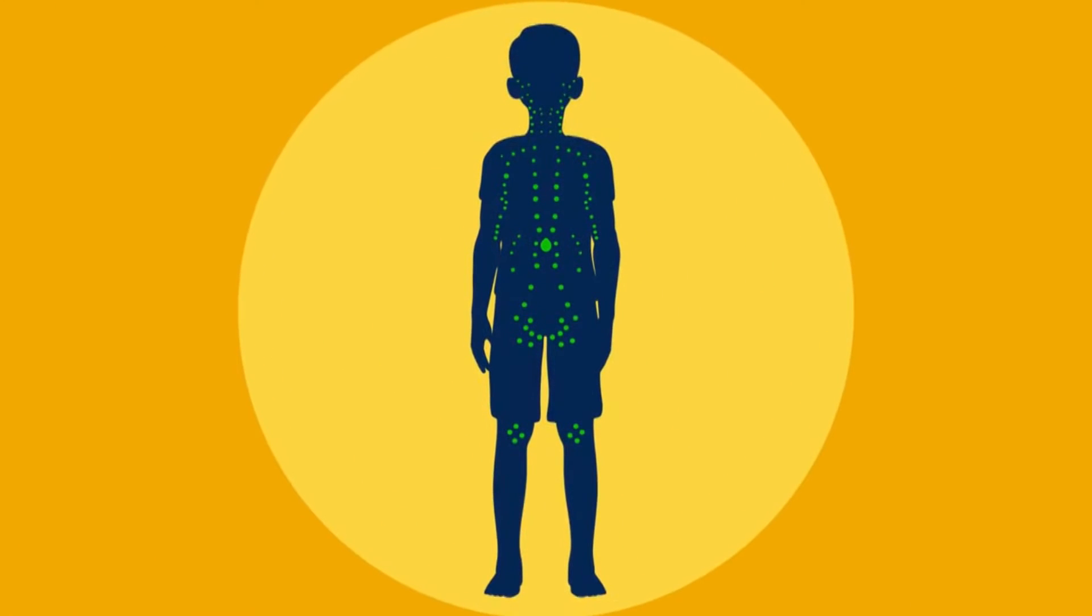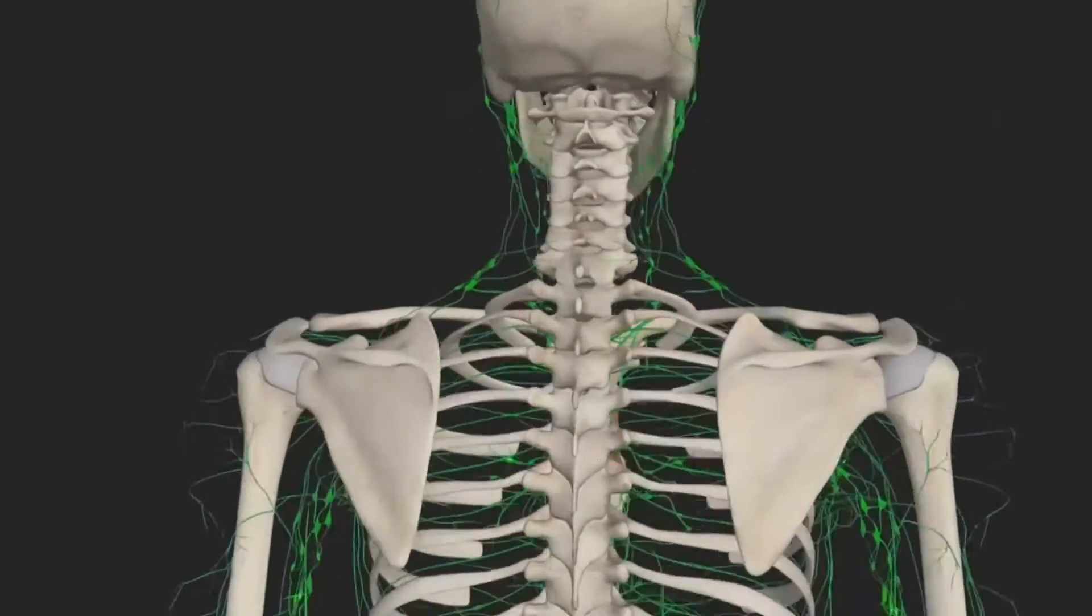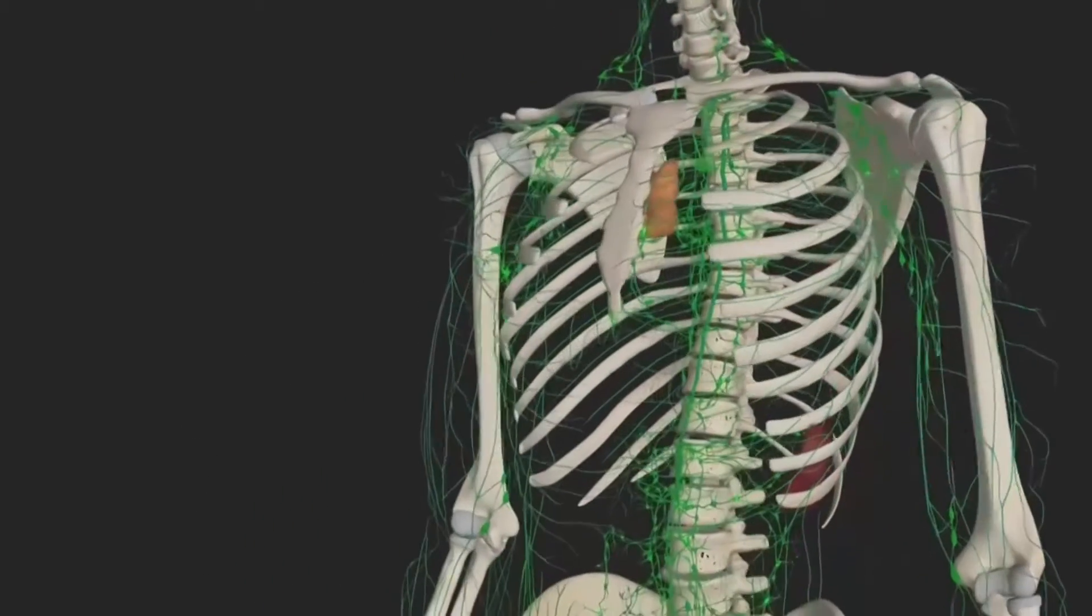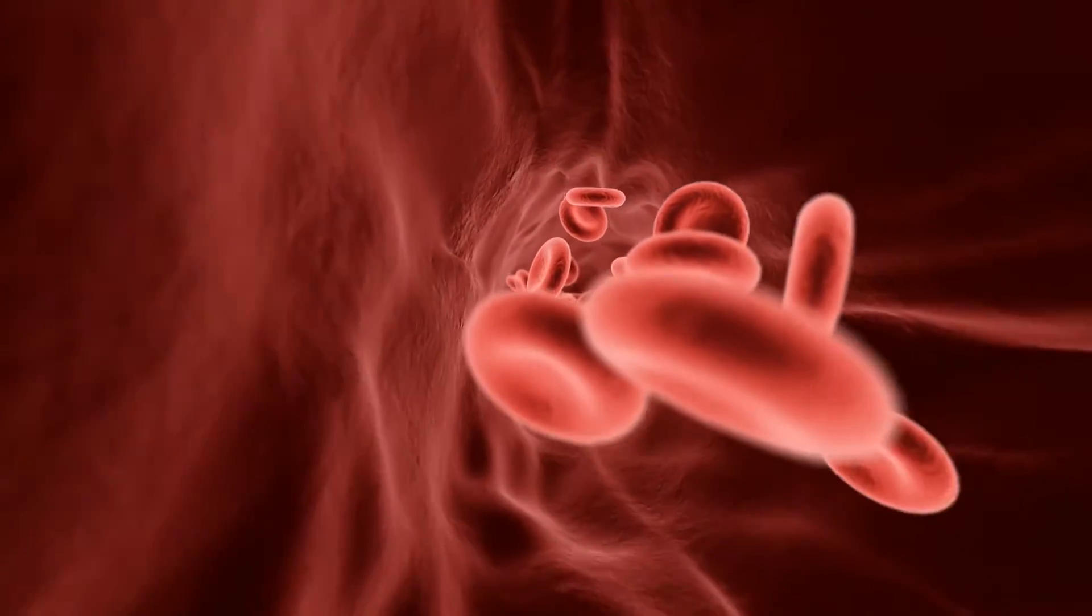The lymphatic or lymph system involves an extensive network of vessels that passes through almost all our tissues to allow for the movement of a fluid called lymph. Lymph circulates through the body in a similar way to blood.